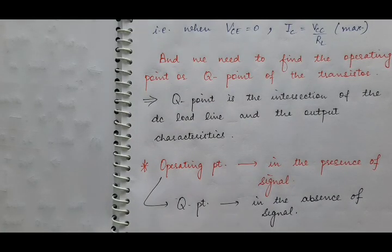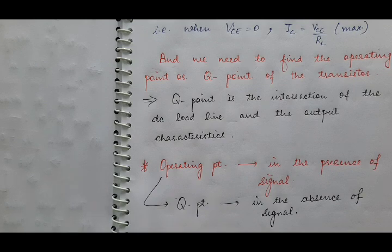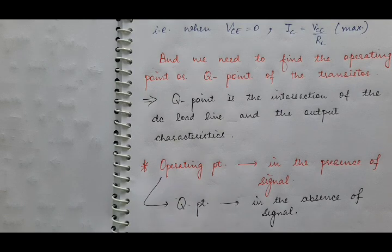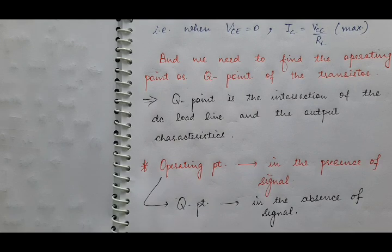Now, next thing is we need to find the operating point, which is also known as the Q point of the transistor. With the help of this operating point — in this condition we haven't applied any input signal to amplify — but if you are using this common emitter transistor as an amplifier and for amplification purposes, when you apply any AC input signal between those two terminals, we are supposing that our output will be an amplified AC signal of the same shape without any distortion.